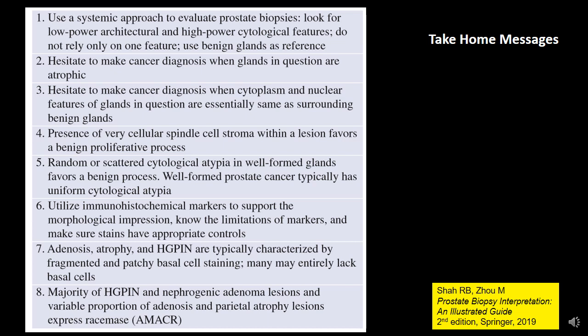Several lesions — notably adenosis, atrophy, and high-grade PIN — are characterized by fragmented and patchy basal cell staining and may even entirely lack basal cells. The majority of high-grade PIN and nephrogenic adenoma, and a variable proportion of adenosis and partial atrophy lesions, can also express AMACR. With that note, I conclude part one of my presentation on benign mimickers of prostate cancer. If you liked this presentation, don't forget to give me a thumbs up — I would love to receive your feedback. Thank you very much.